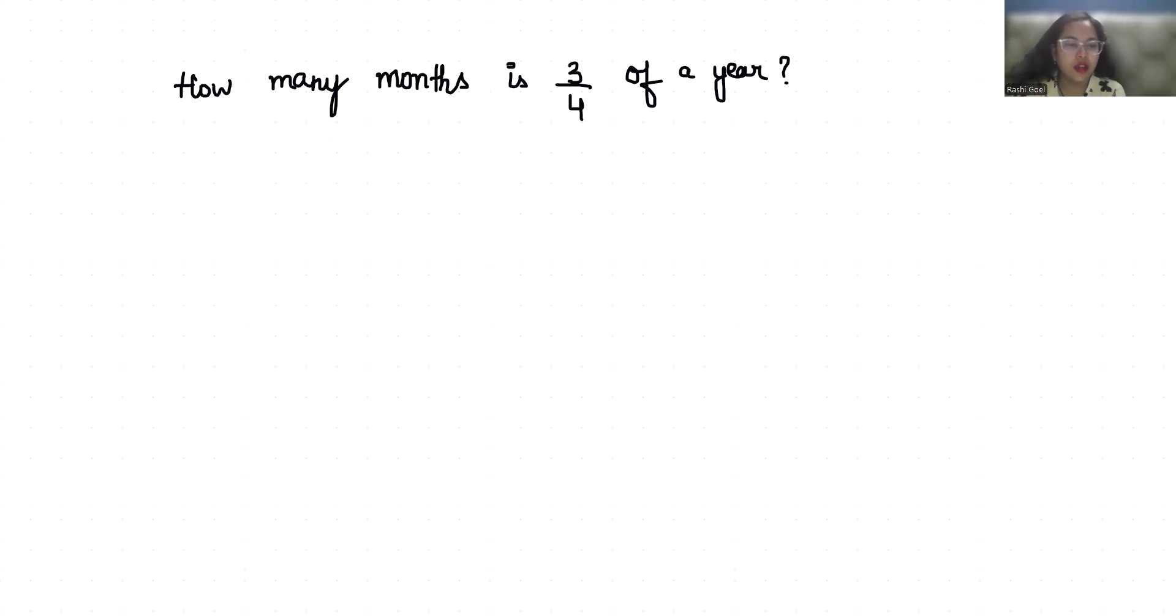In our year, means in one year, so how many months in one year? There are 12 months. And we have to find 3/4 of one year, which means 3/4, and 'of' means multiplication.